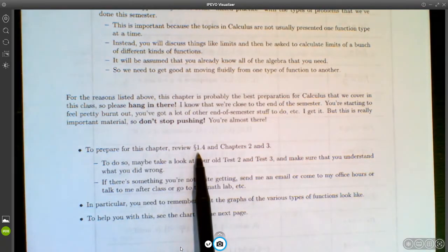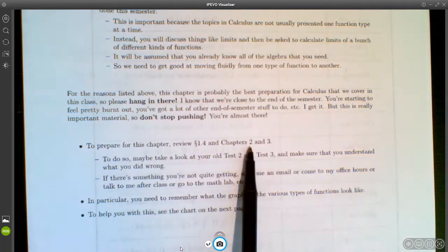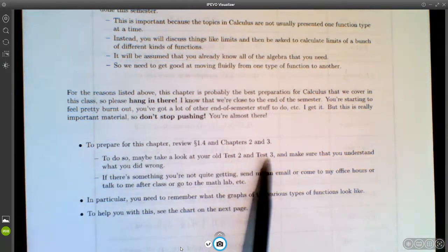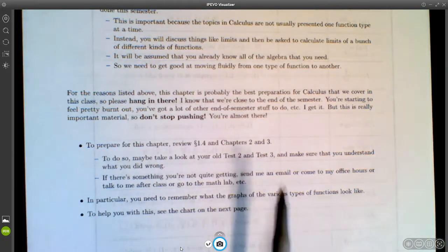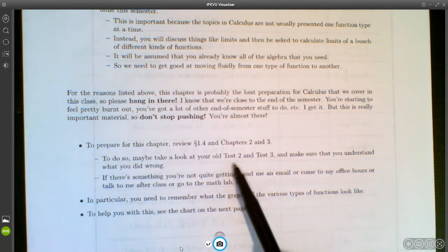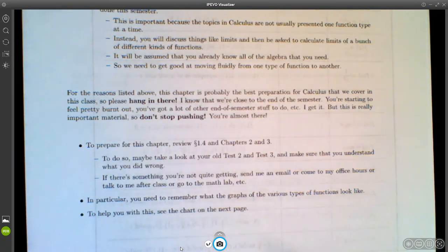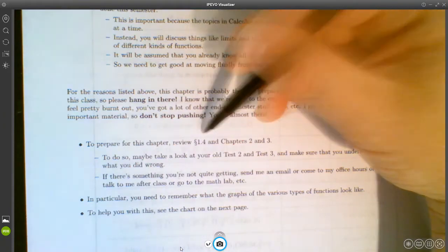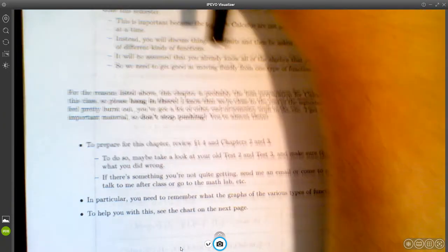A good thing to do to help you review for this chapter would be to review section 1.4, and then get a really good review of chapters 2 and 3. We actually didn't, I grouped the sections differently, so you may not have had a test 2 and a test 3. But anyway, definitely review chapters 2 and 3, and review section 1.4 in particular.